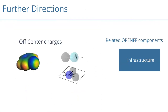Something else on fixed charges: including off-center charges. There is the idea that we can significantly improve performance when we include off-center charges. Most of the infrastructure is already in place, so including off-center charges should proceed in parallel with the other efforts. We still need to implement it in the toolkit, but then this part of the project can also start.